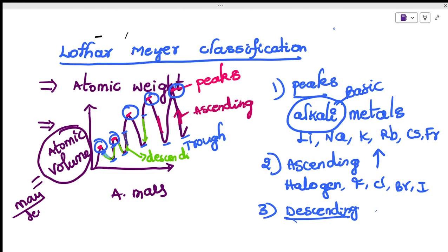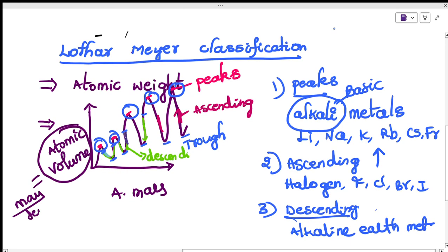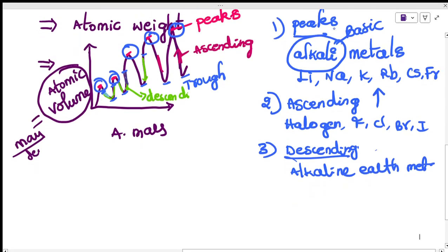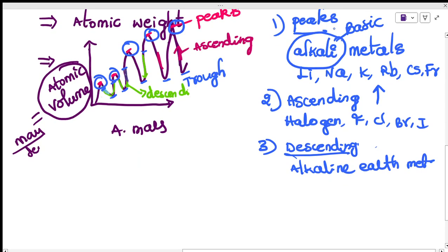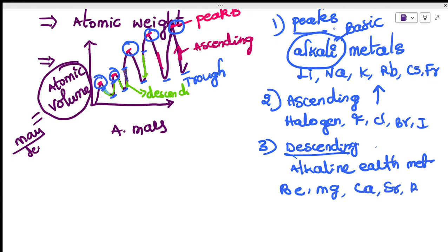The descending part of the graph contains the alkaline earth metals: beryllium, magnesium, calcium, strontium, and barium. These elements occupy the descending position in the Lothar Meyer graph.